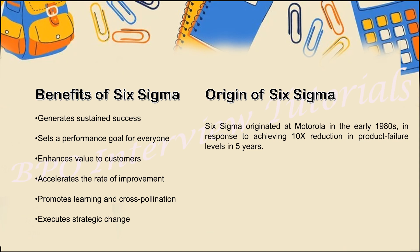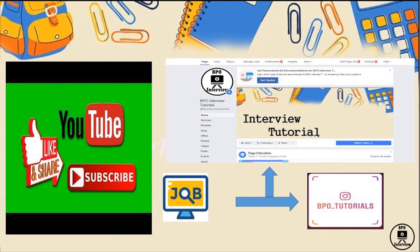Six Sigma originated from Motorola in the 1980s, where there was a production failure and scientists worked on improving it, giving Motorola significant gains. The benefits of Six Sigma include: an error-free process, reduced defects, increased customer satisfaction, improved rate of improvement, ability to execute statistical changes when required, and sustained long-term success. Remember the introduction, key concepts, benefits, and origin when answering in an interview.